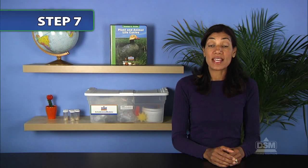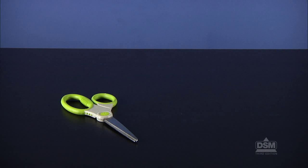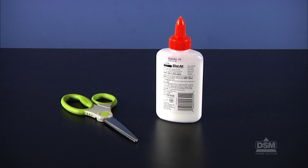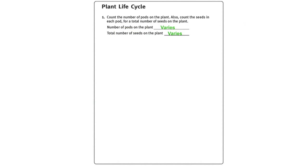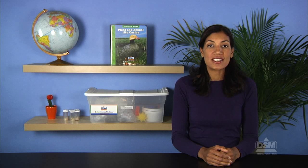Next, distribute a copy of Activity Sheet 9, Part B to each student and give each team of two a pair of scissors and some glue. Instruct students to cut out the pictures and glue them in a circle format on Activity Sheet 9, Part A. Encourage volunteers to describe each stage of the life cycle.